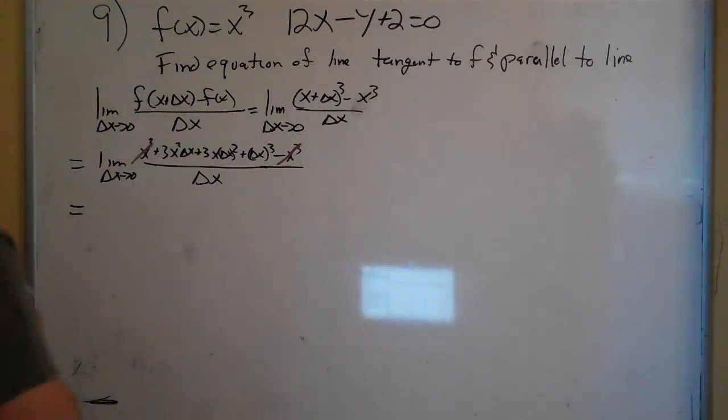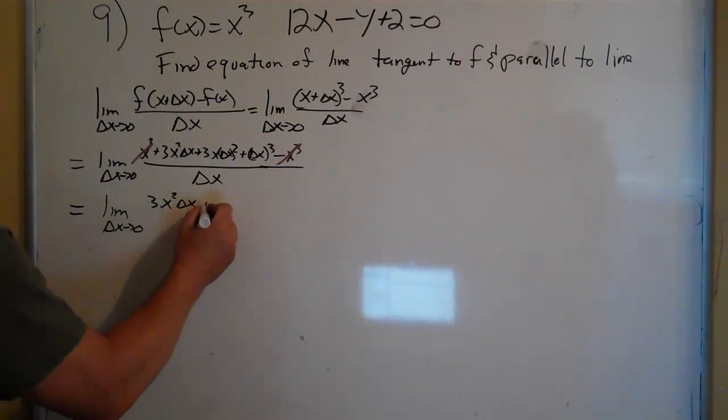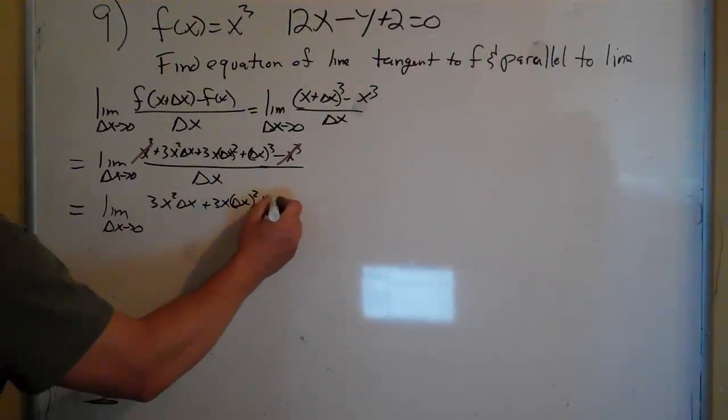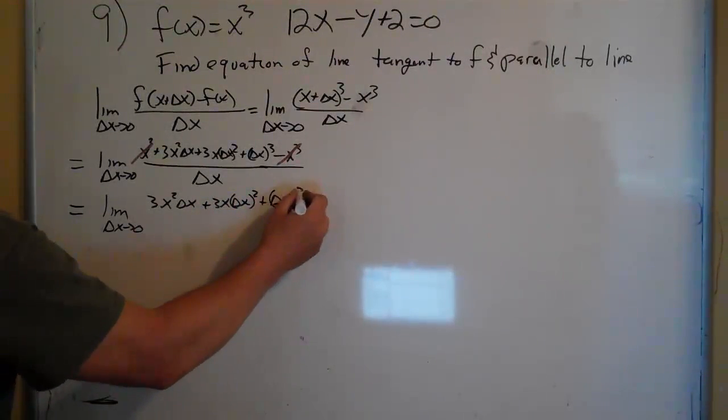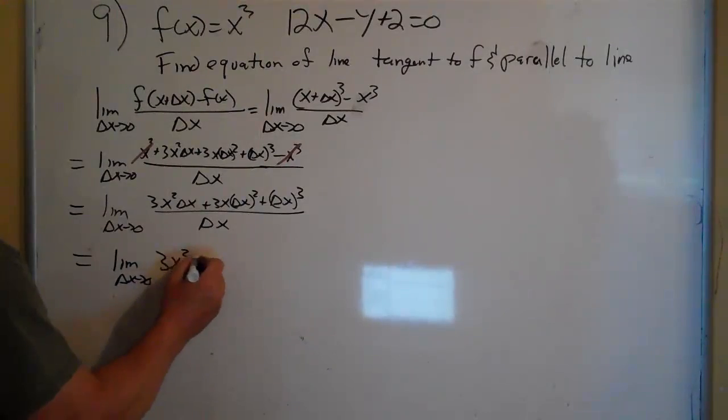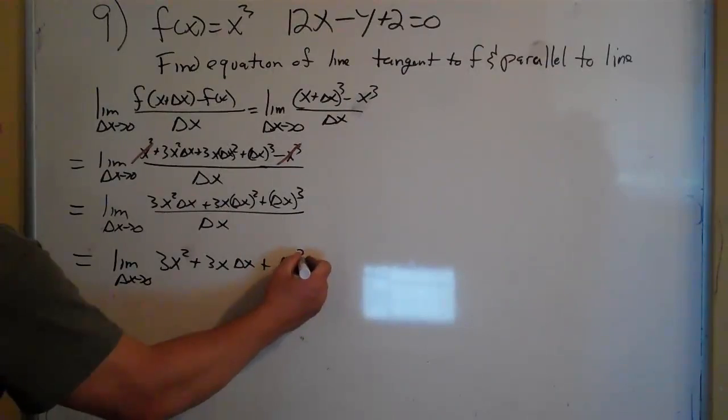What we have left is the limit as delta x goes to 0 of 3x squared delta x plus 3x delta x squared plus delta x cubed all over delta x. Now notice every term has delta x in it, so if we divide those out, we'd have the limit as delta x goes to 0 of 3x squared plus 3x delta x plus delta x squared.